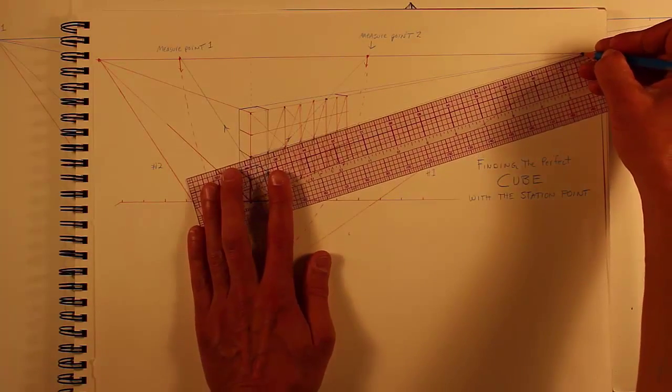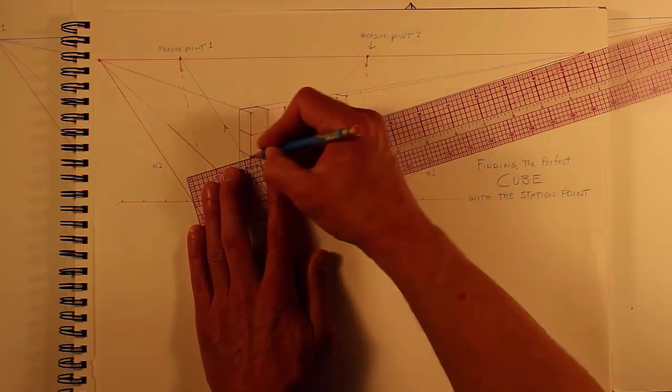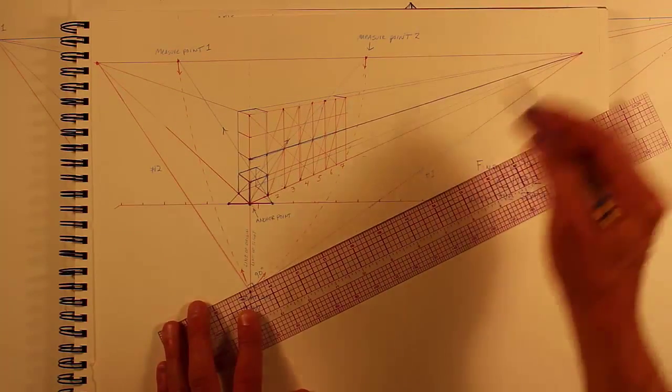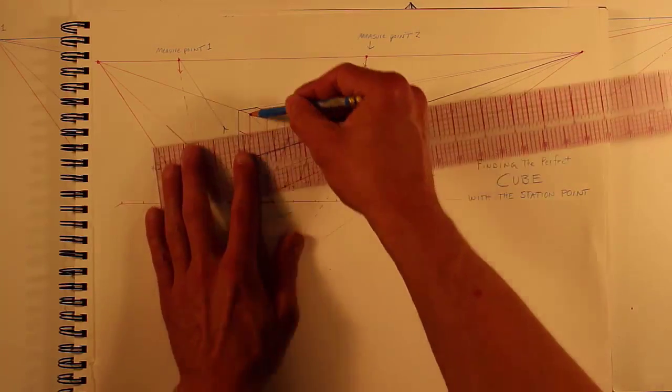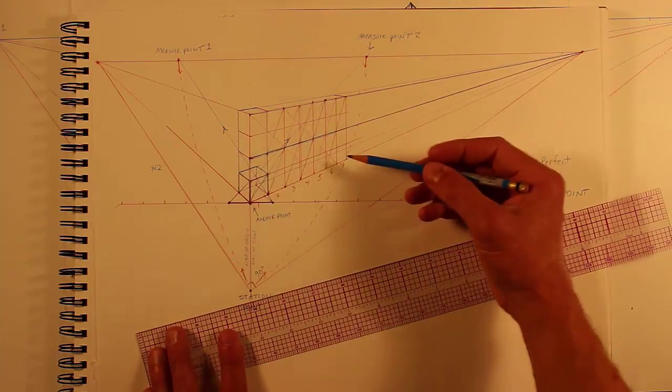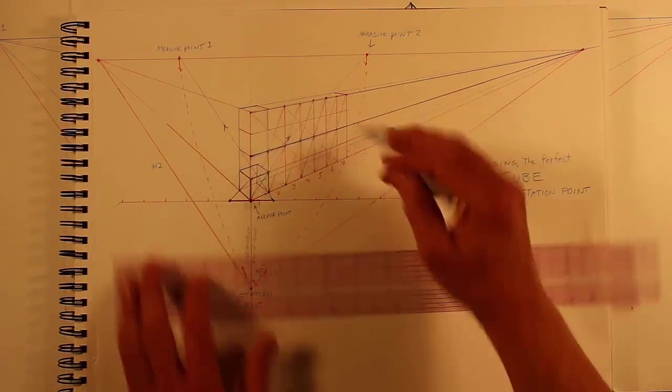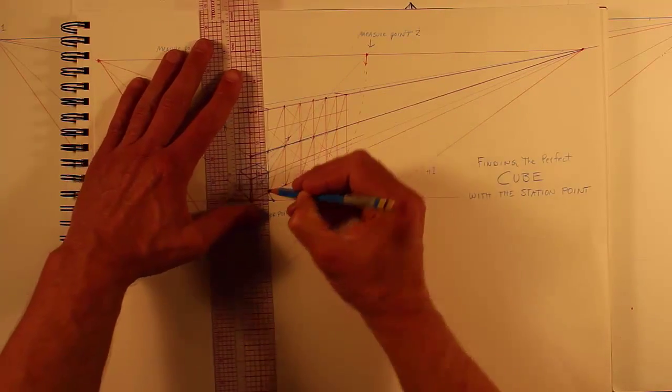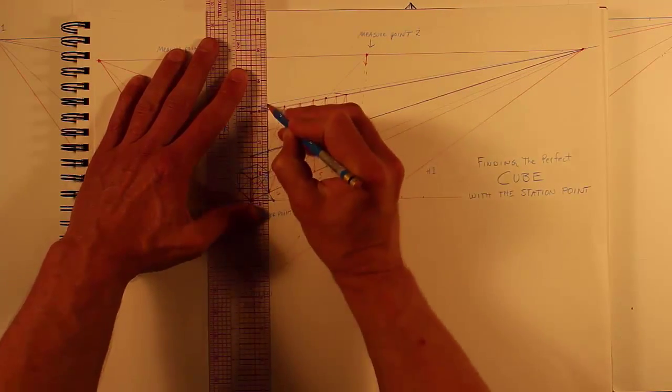And go right to the vanishing point, same with this, and then expressed this vertical here, like that.